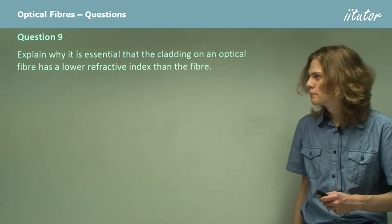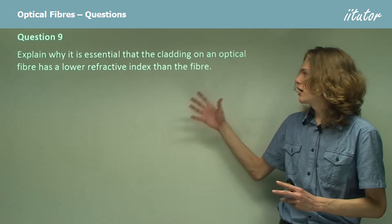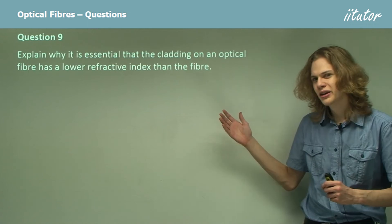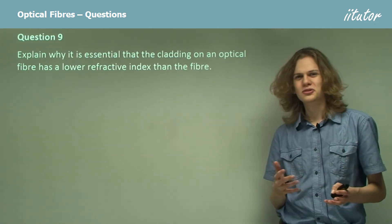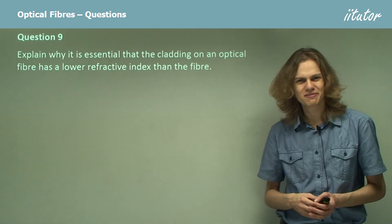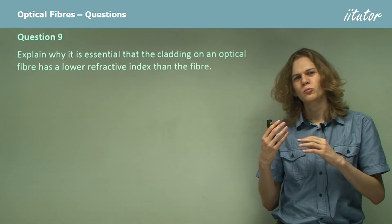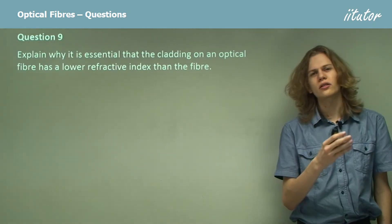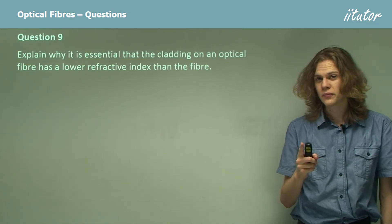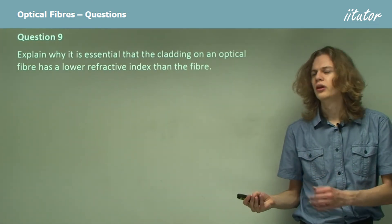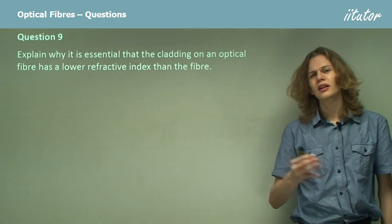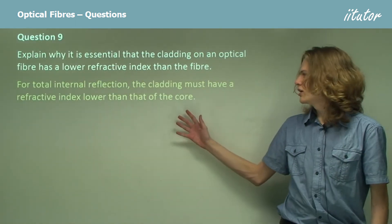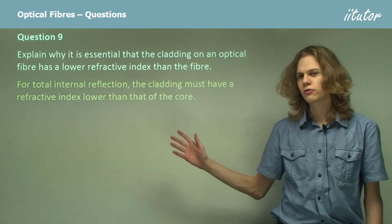Question 9. Explain why it is essential that the cladding of an optical fiber has a lower refractive index than the core. It has to do with the fact that you can't get a sine of any angle greater than 1. For total internal reflection, the cladding must have a refractive index lower than that of the core.